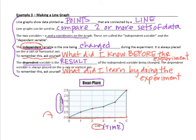And you don't have to add this. You don't have to include which one's independent, which one's dependent. But I want you to be able to tell which one is which. So what did you learn by doing the experiment? So once you planted the bean plant, what did you learn? That's going to be your dependent variable.